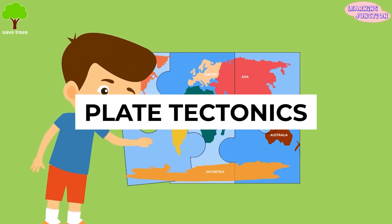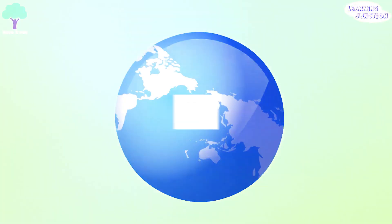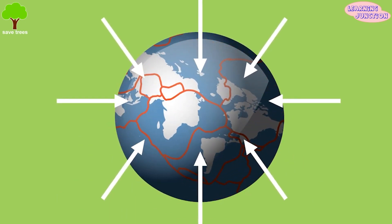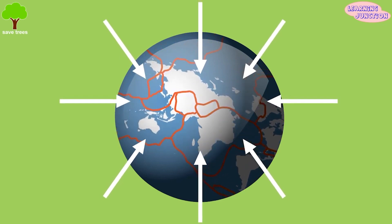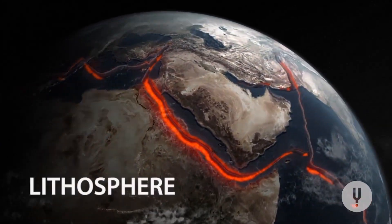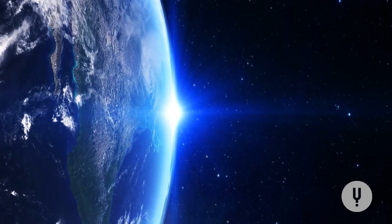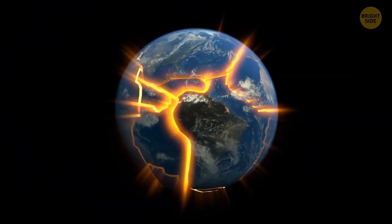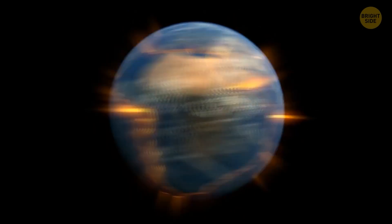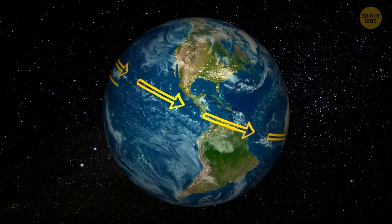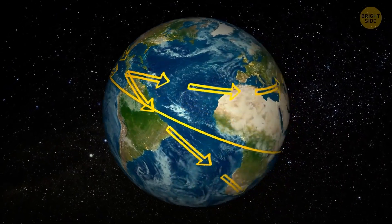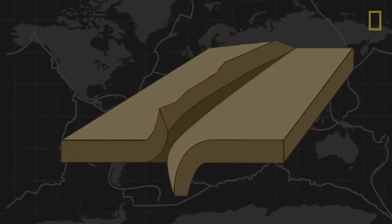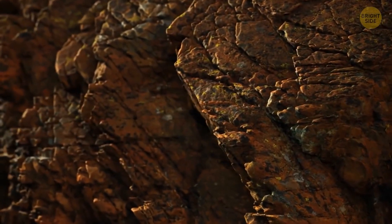Plate tectonics is the driving force behind Earth's dynamic landscape, shaping the distribution of land and water on our planet. The Earth's outermost layer, the lithosphere, is composed of rigid plates that float atop a more fluid layer called the asthenosphere. The lithosphere is broken into several major and minor tectonic plates, which move due to the convective forces generated by the Earth's mantle. These plates can either converge, collide, diverge, move apart, or slide past one another, causing various geological phenomena.